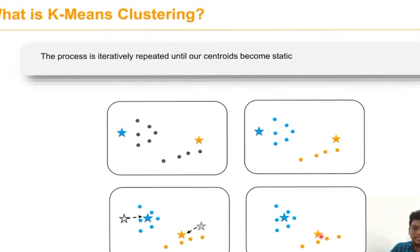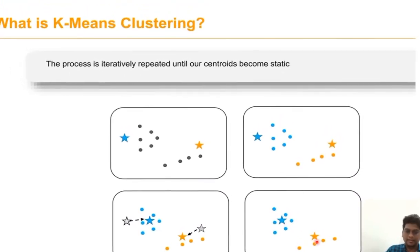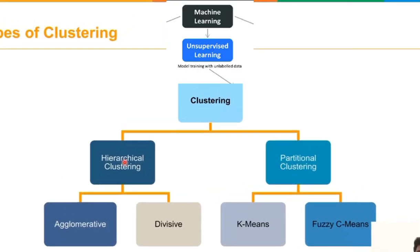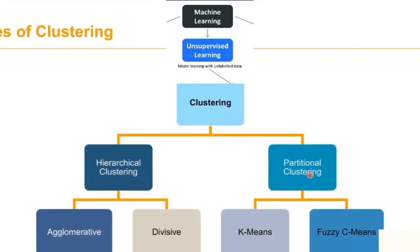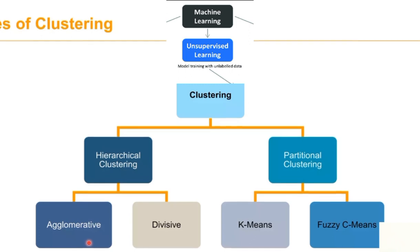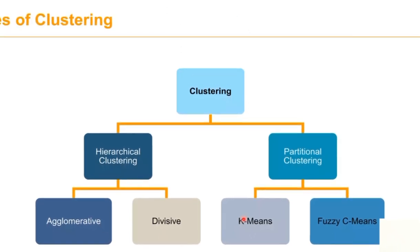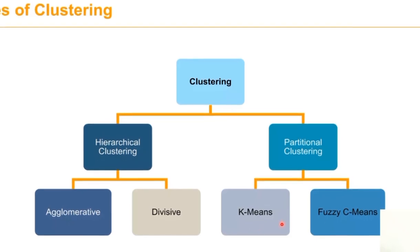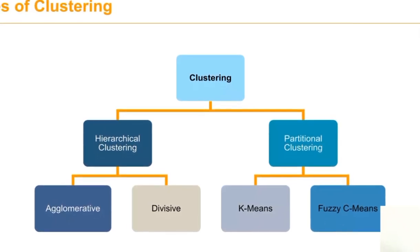So we have to finalize the centroid point at that time. Types of clustering: Clustering is classified into Hierarchical mode and Partitional mode. Hierarchical clustering is further subdivided into Agglomerative and Divisive. Partitional clustering is further classified into K-means and Fuzzy C-means algorithm.